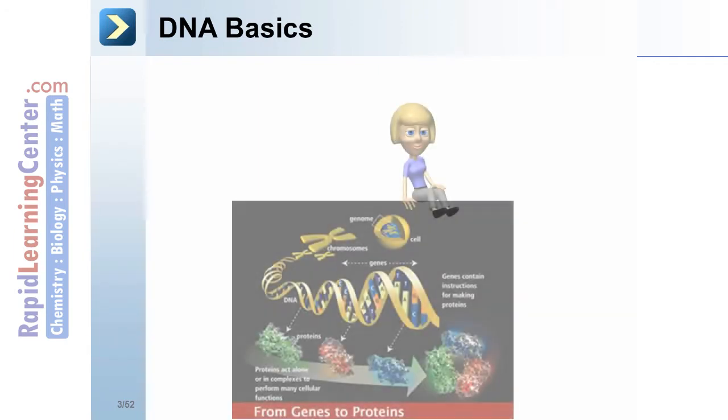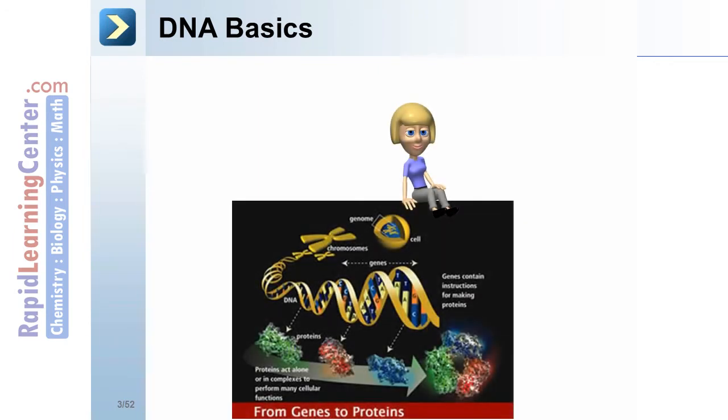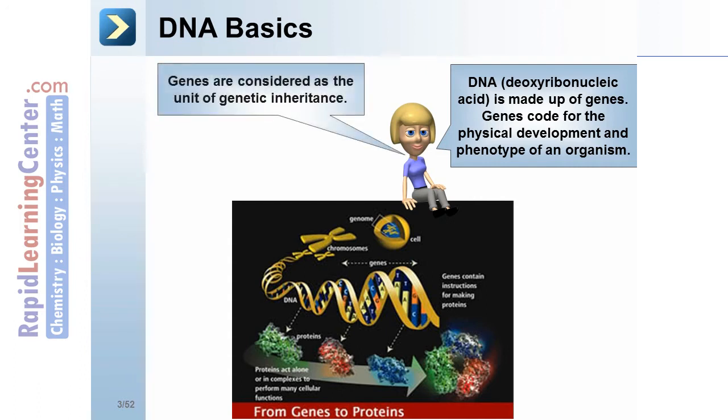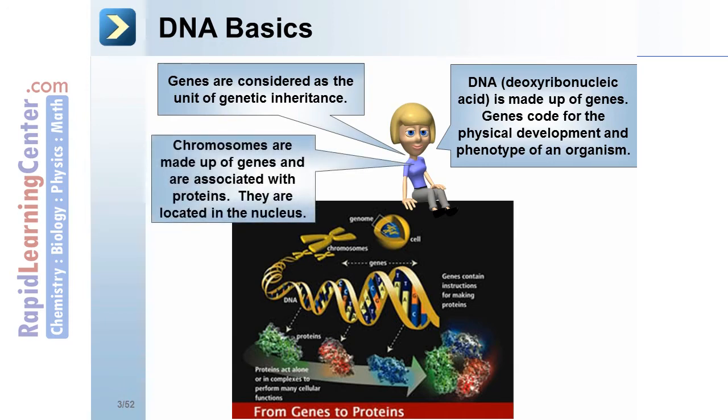DNA basics. From genes to proteins. DNA, deoxyribonucleic acid, is made up of genes. Genes code for the physical development and phenotype of an organism. Genes are considered as the unit of genetic inheritance. Chromosomes are made up of genes and associated with proteins. They are located in the nucleus.